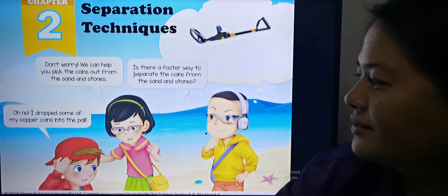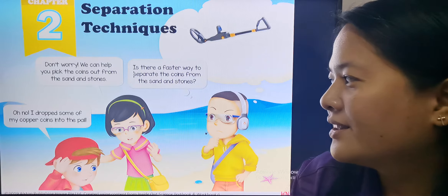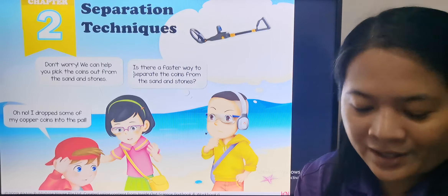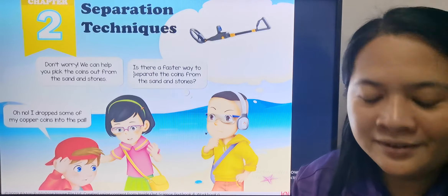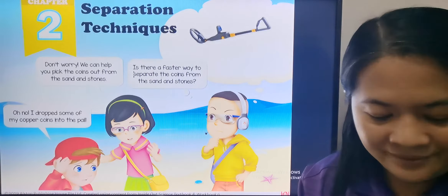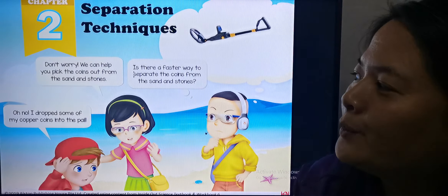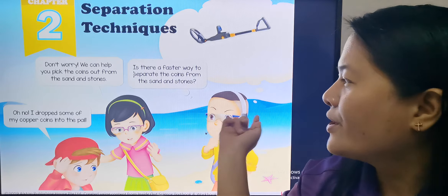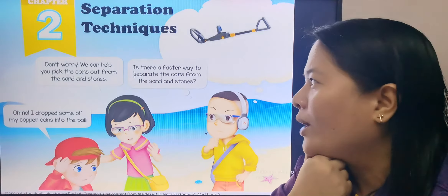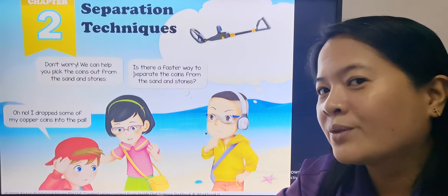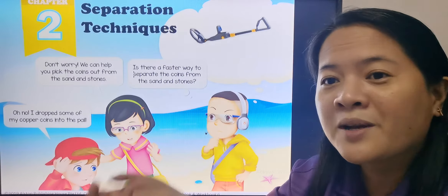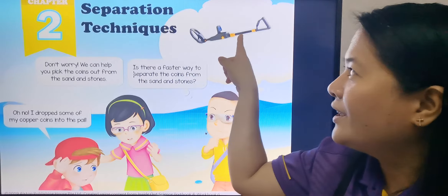So in this one, the boy is worried because he said, 'Oh no, I dropped some of my copper coins into the pail.' He dropped his copper coins in the pail. And then the girl said, 'Don't worry, we can help you pick the coins out from the sand and the stones.' And then this boy is thinking, is there a faster way to separate the coins from the sand and stones? Because if you're going to pick one by one, it might take longer time. So he was thinking maybe he can use this one in the picture.